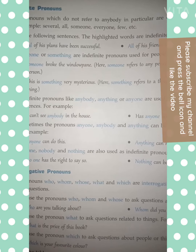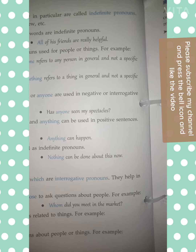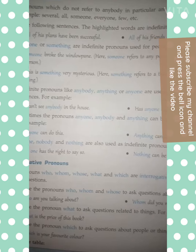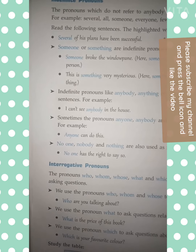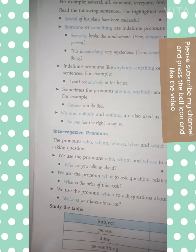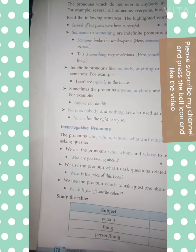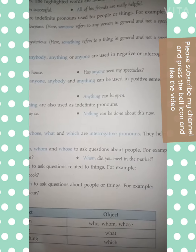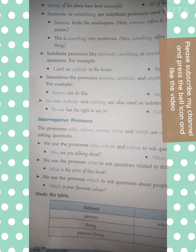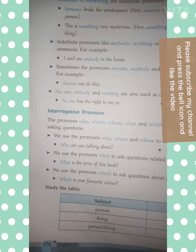'This is something very mysterious' — 'something' refers to a thing in general and not a specific thing. Indefinite pronouns like anybody, anything, and anyone are used in negative or interrogative sentences. For example: 'I can't see anybody in the house.' 'Has anyone seen my specialist?' The pronouns anyone, anybody, and anything are used for positive sentences. For example: 'Anyone can do this.' 'Anything can happen.'